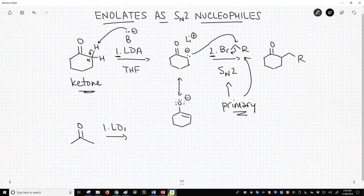Step one, LDA. Step two, a primary halide, and we would still get an alkylated ketone.